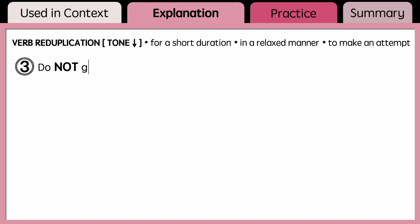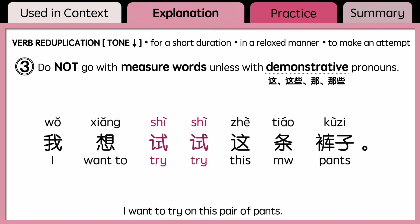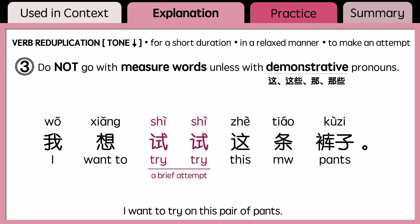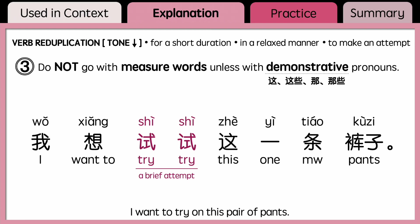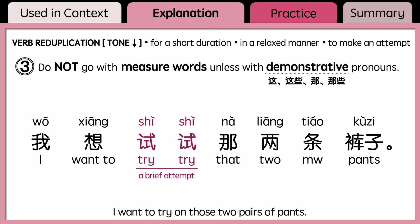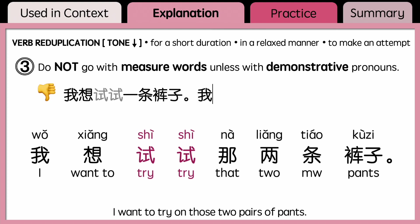Third, reduplicated verbs do not go with measure words unless they are defined with demonstrative pronouns. When using measure words, make sure to put demonstrative pronouns like 这, 这些, 那, or 哪些. For example, you can say 我想试试这条裤子, 我想试试这一条裤子, or 我想试试那两条裤子. But you cannot say 我想试试一条裤子 or 我想试试两条裤子, since the measure words are used without demonstrative pronouns.